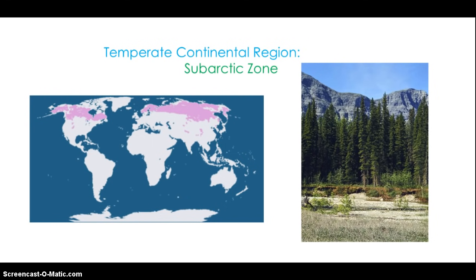Subarctic zones are covered in snow for most of the year. Not all trees can survive the long winters, but evergreen trees such as pine and spruce are hardy enough to survive the cold. Other ferns, shrubs, and grasses can be found during summer months. The forests of the subarctic climate are often called the taiga. Taiga is the largest land zone in the world, making its timber an important resource.